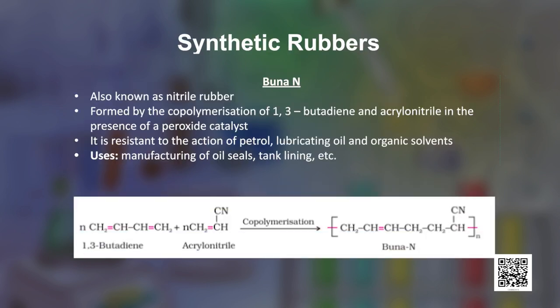Buna N is obtained by the copolymerization of 1,3-butadiene and acrylonitrile in the presence of a peroxide catalyst. It is also called nitrile rubber and is resistant to the action of petrol, lubricating oil, and organic solvents. Hence, it finds applications in making oil seals and tank linings. These three synthetic rubbers are used very extensively across all industries.